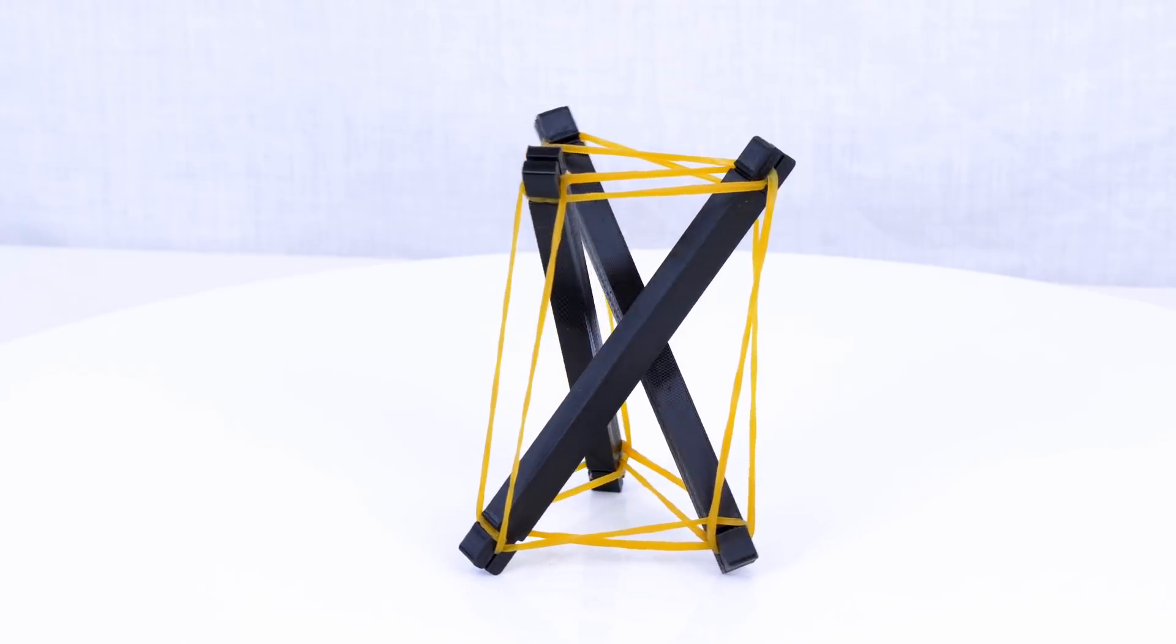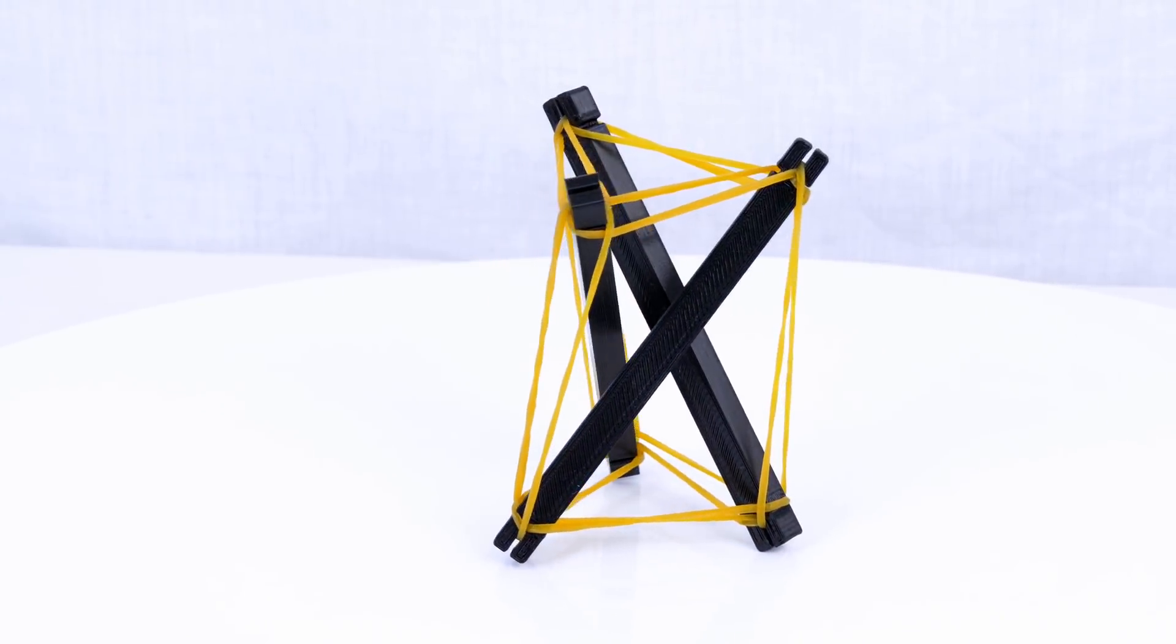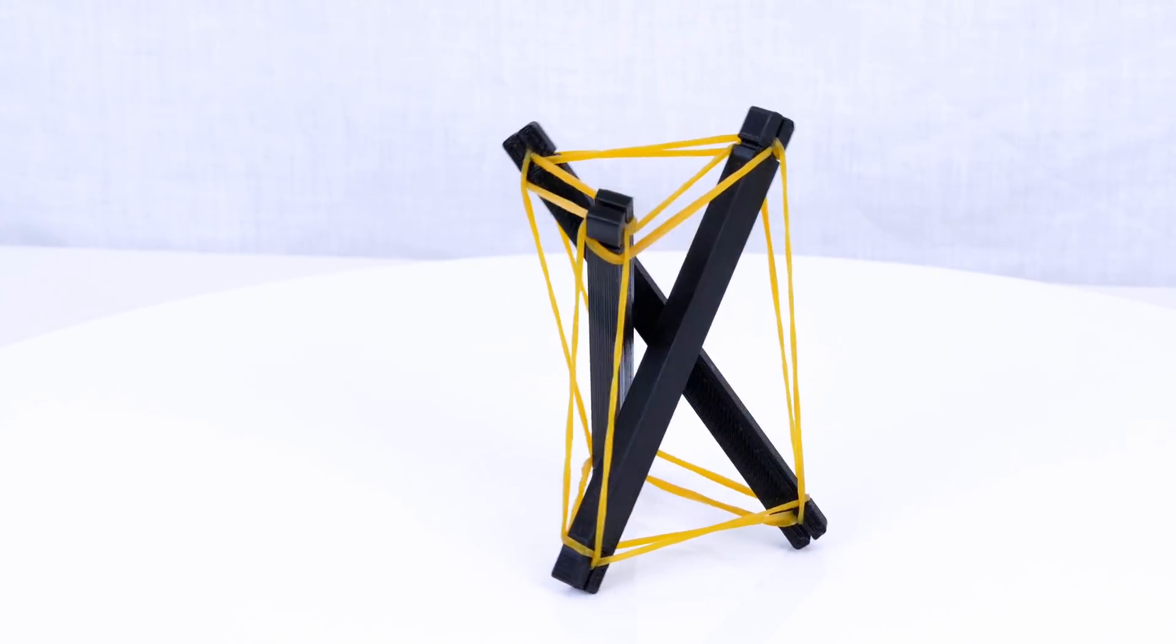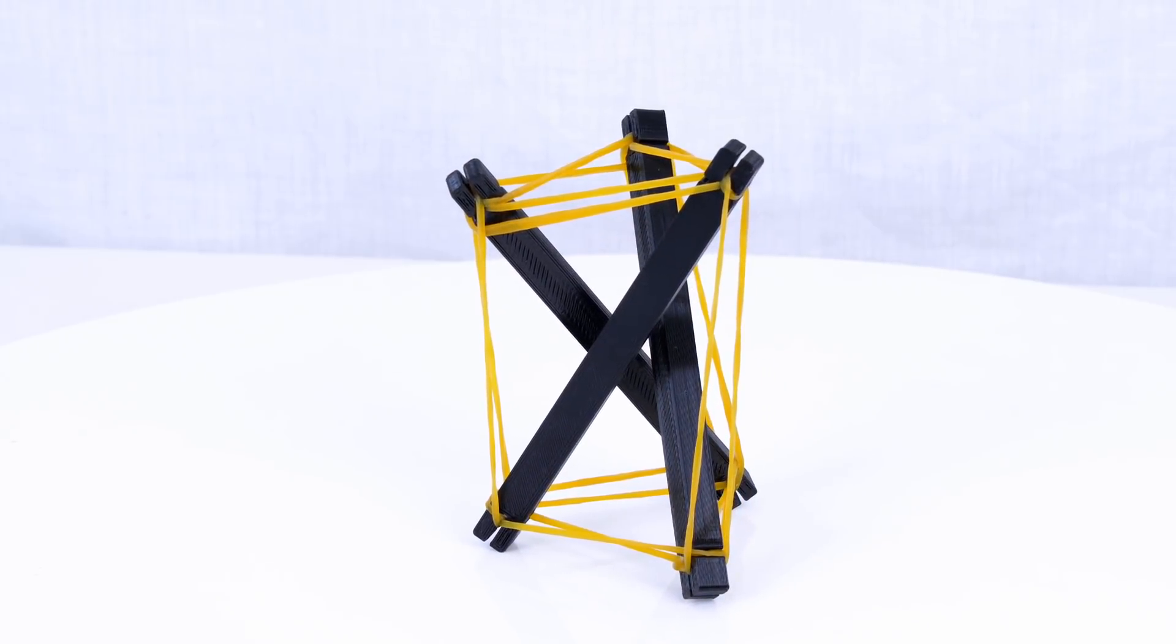But first let's look at the concepts. This is a simple structure with three rigid members that I 3D printed and added elastic bands to to provide tension.